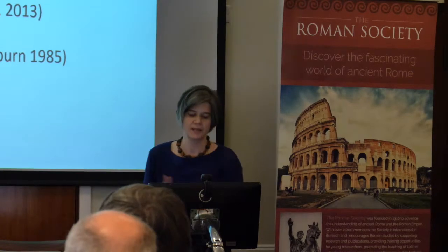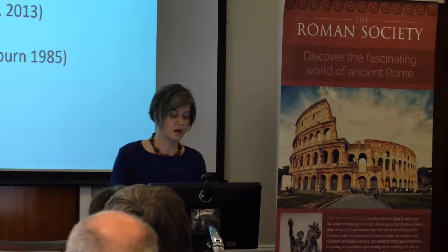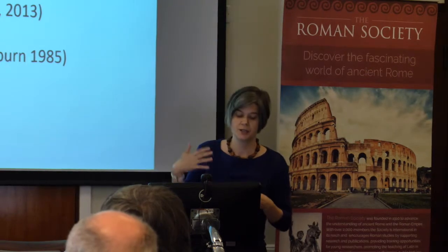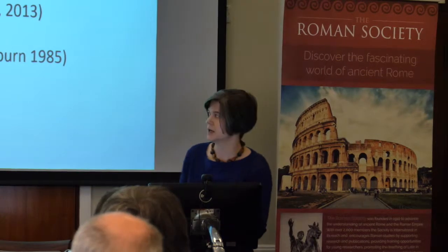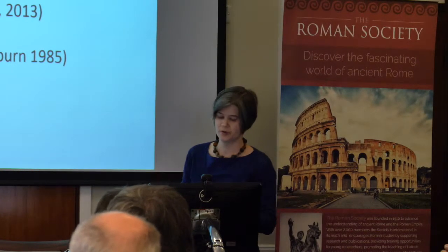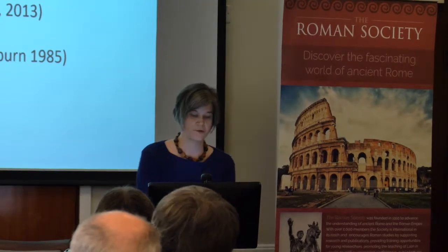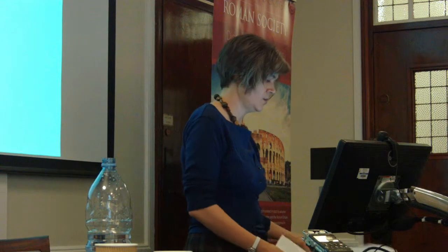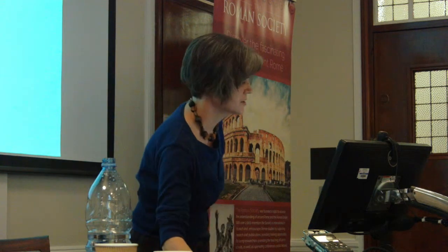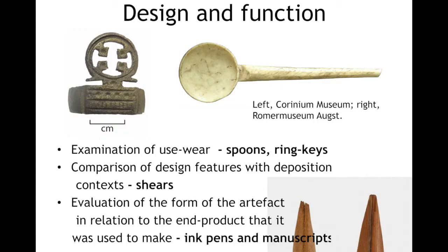In this paper I want to give some brief examples of the types of objects I've been using to explore various questions relating to artefact design, and then move on to a more detailed case study where I'll look at the design features of finger rings in relation to the motifs that are depicted on them. First, an overview of some of the types of objects and questions I've been considering.